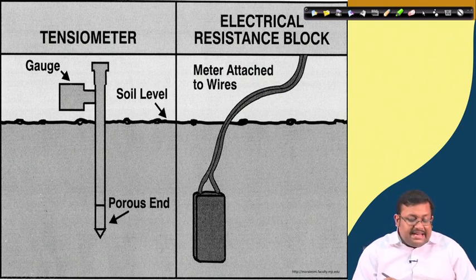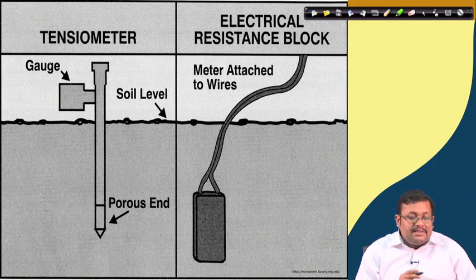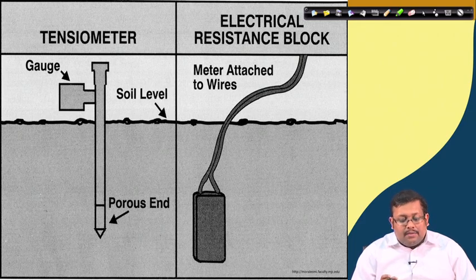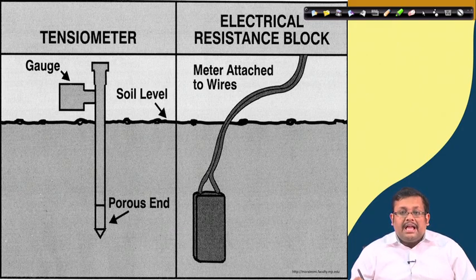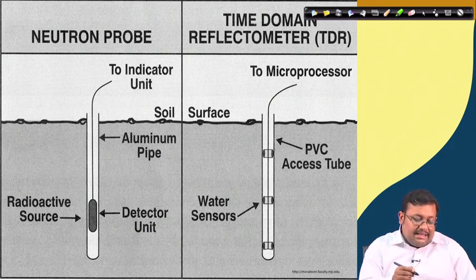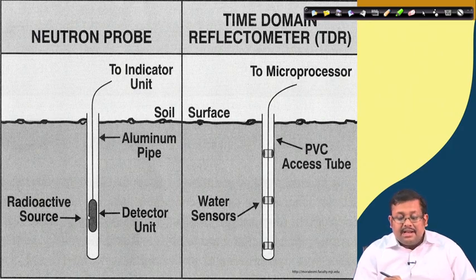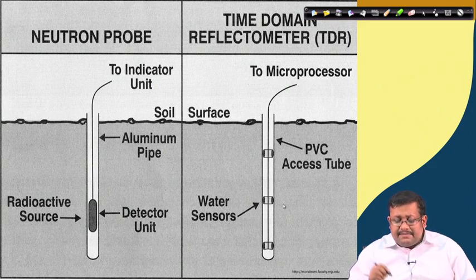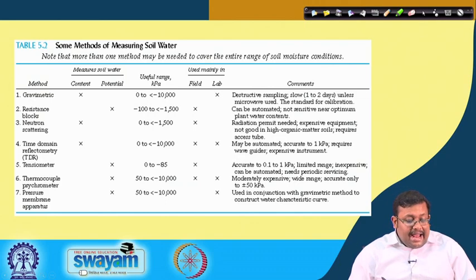In summary: the tensiometer's porous head is inserted into the soil and the gauge measures the vacuum; the electrical resistance block meter is attached to wires measuring resistance to electrical flow based on moisture absorbed; the neutron probe uses an aluminum access pipe with a detector unit and radioactive source inserted; and the TDR has water sensors and a PVC access tube. This gives a basic overview of different methods of soil water content measurement.